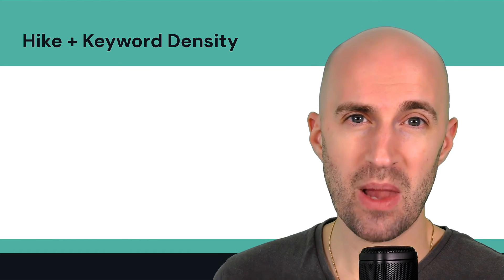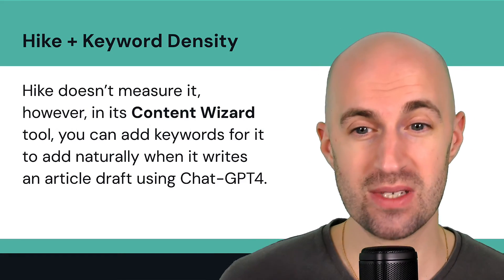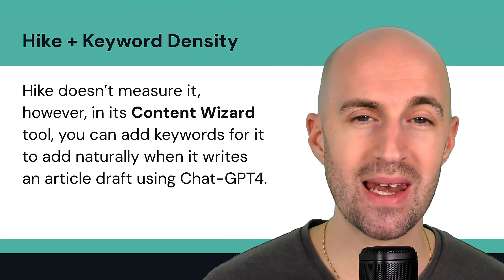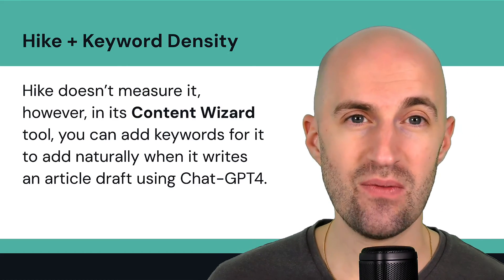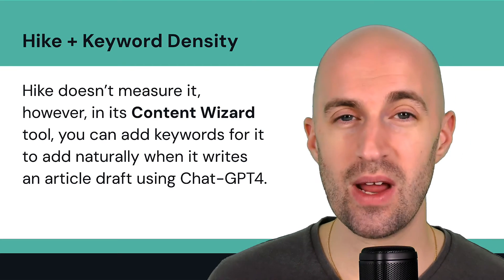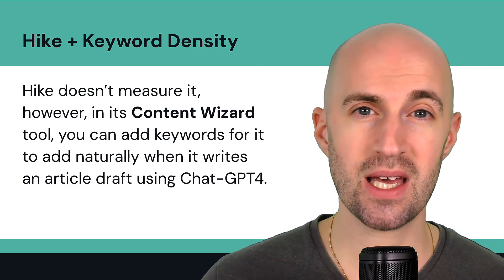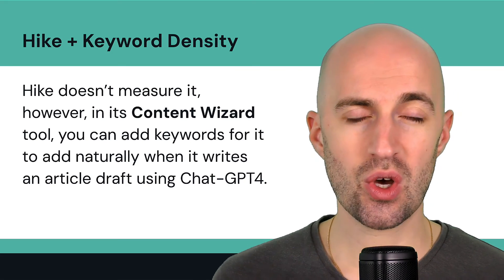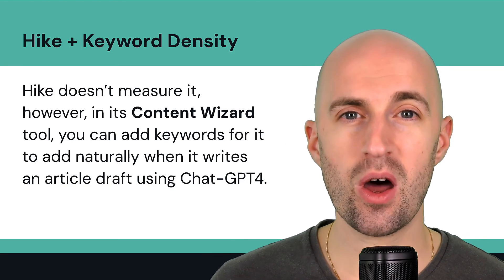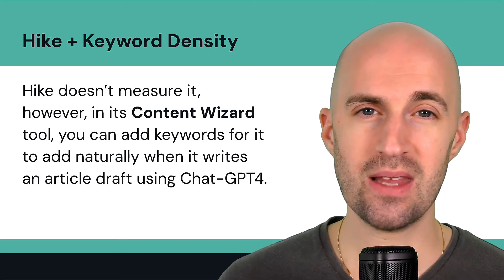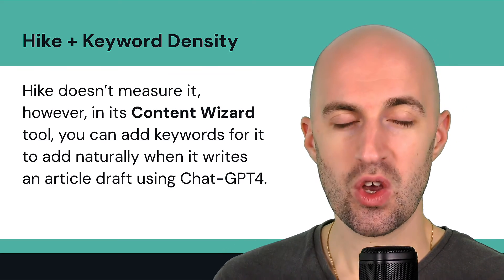Let's talk about Hike SEO — the platform and keyword density. Hike doesn't measure keyword density because, as we said, it's outdated. However, in its content wizard tool, you can add keywords for it to naturally use when it writes an article for you using ChatGPT-4. The AI generates content as a starting point to save you time, and then you can take that content and edit it to your tone of voice, add information, or remove irrelevant parts. Hike automatically sprinkles in relevant keywords to keep the content more focused on the topic.